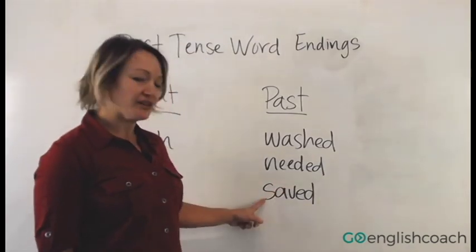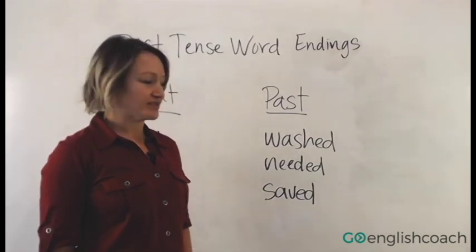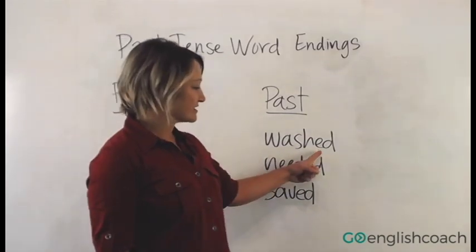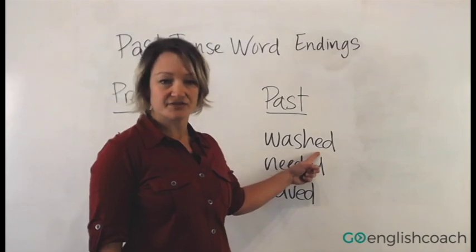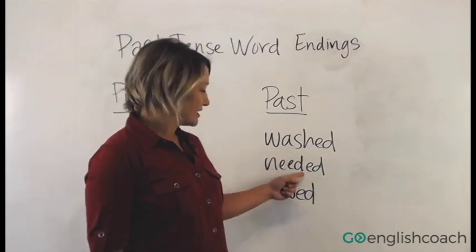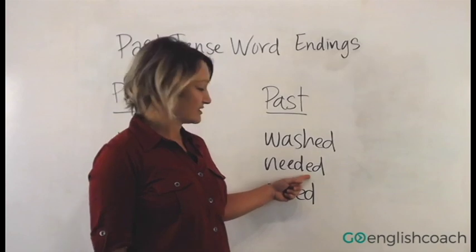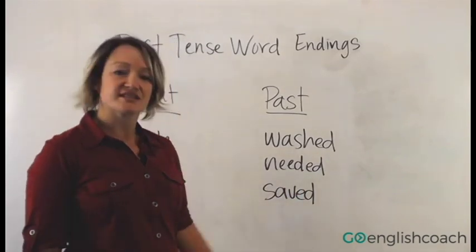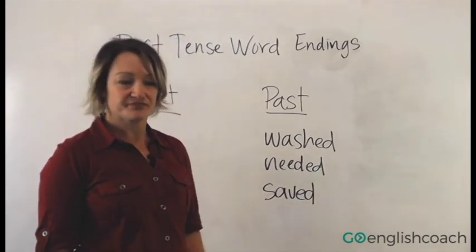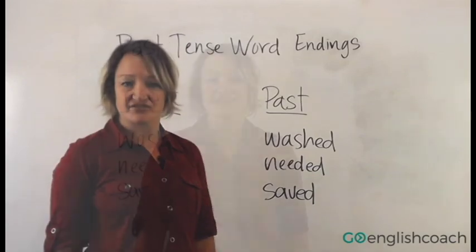And the last one is 'saved.' So it's not 'save-ed,' it's 'saved' — that final sound is a 'd.' The next question is: how do I know how to pronounce the sound at the end?